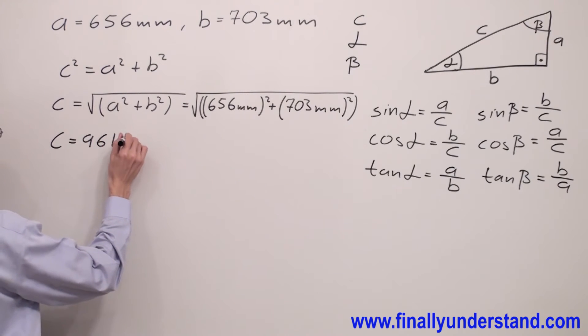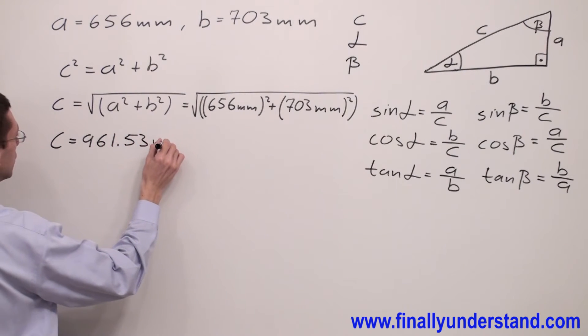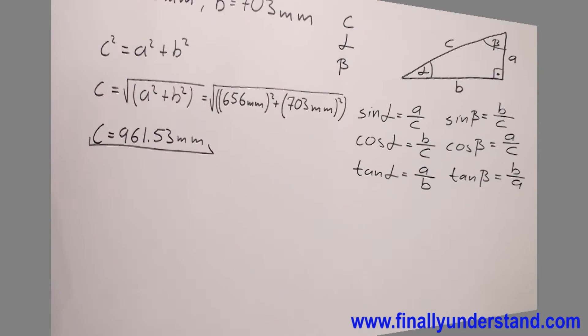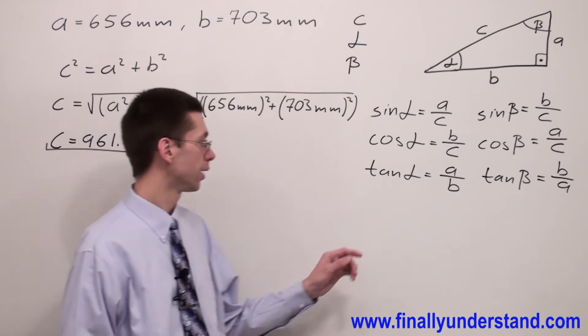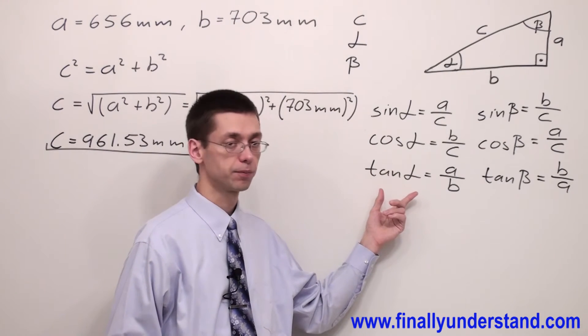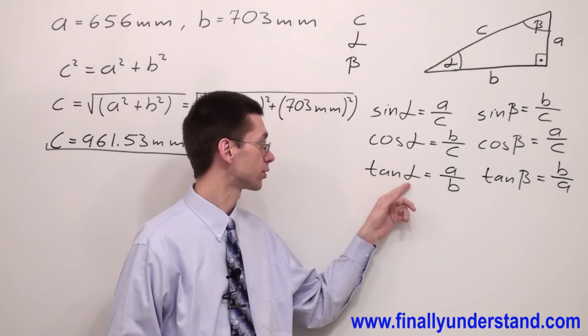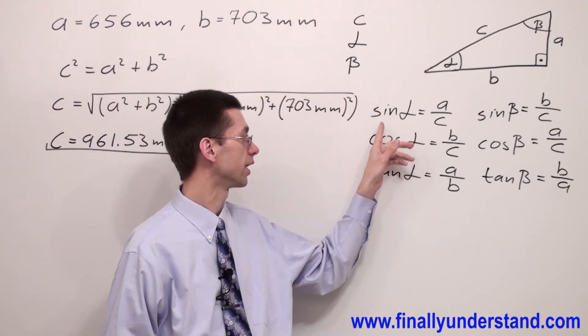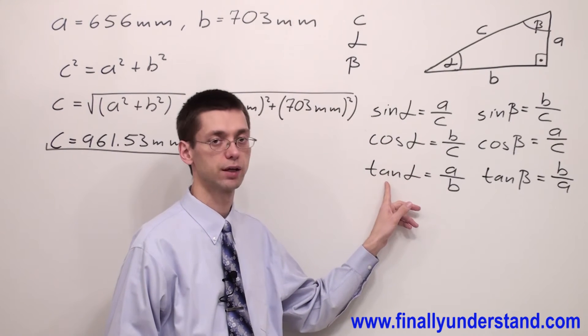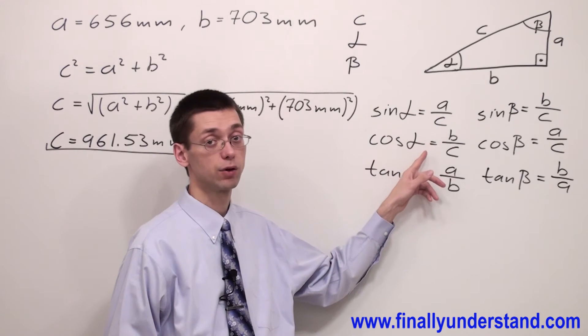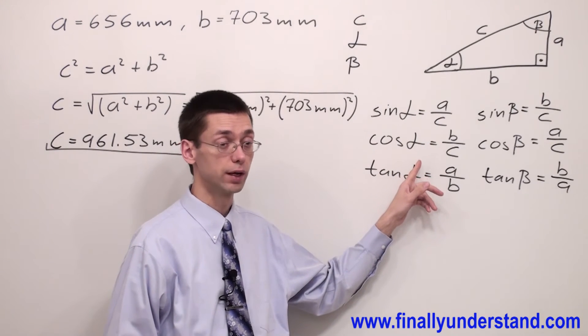...53 millimeters, and this is the length of side c. In order to find angle alpha, I'm going to use tangent alpha. Why? Because this is my choice at this moment. I can use sine, cosine, or tangent. I can use either one because all sides of my triangle are known already.